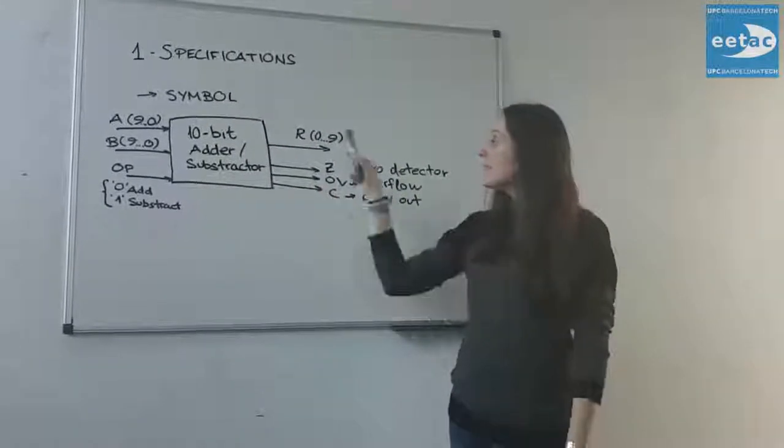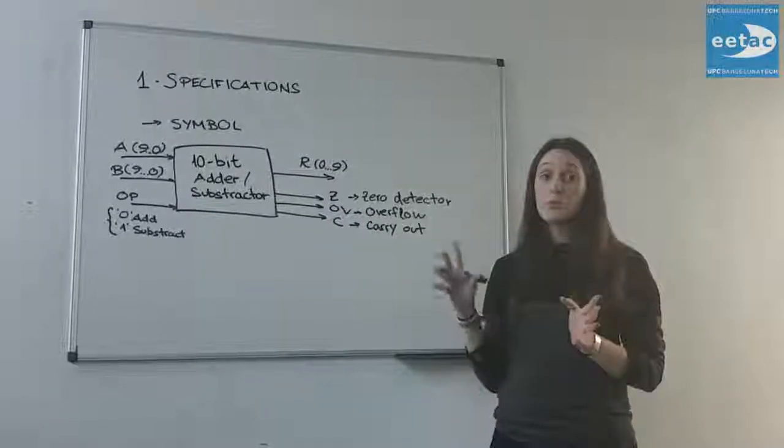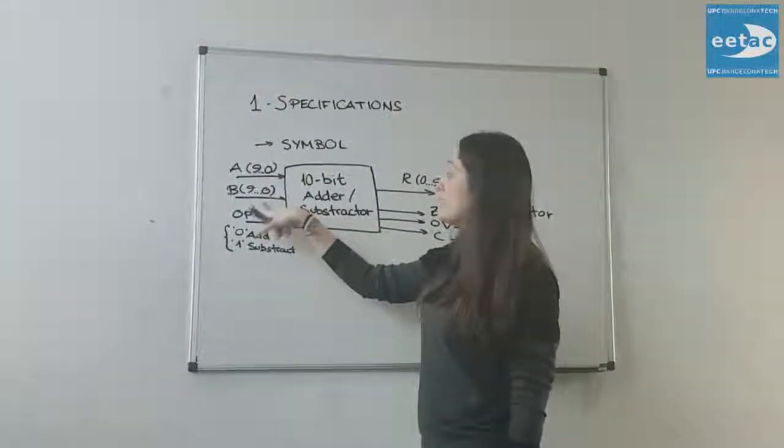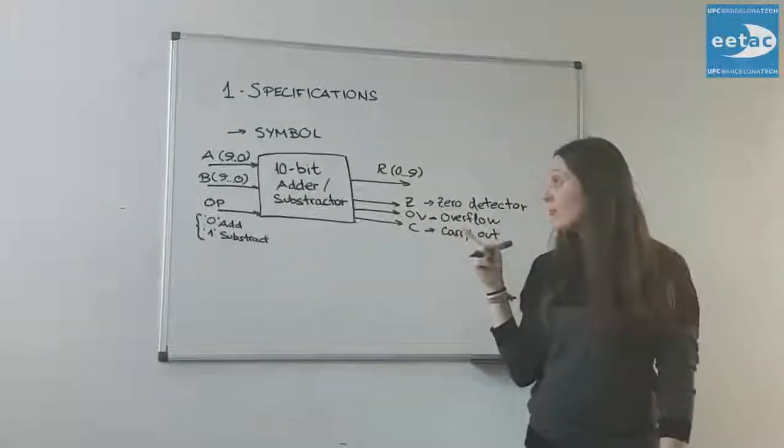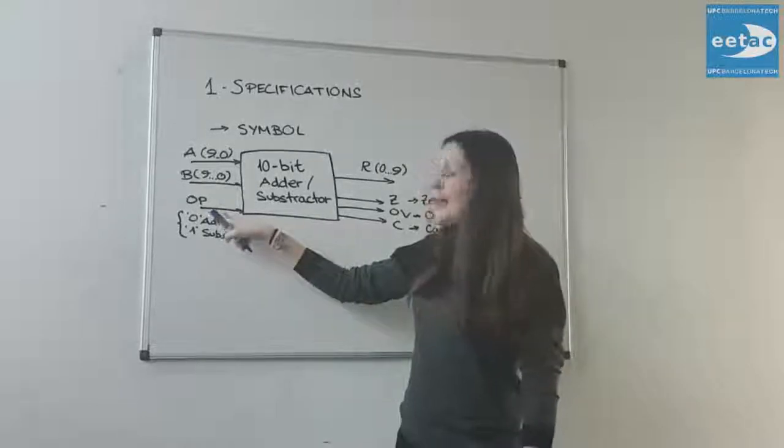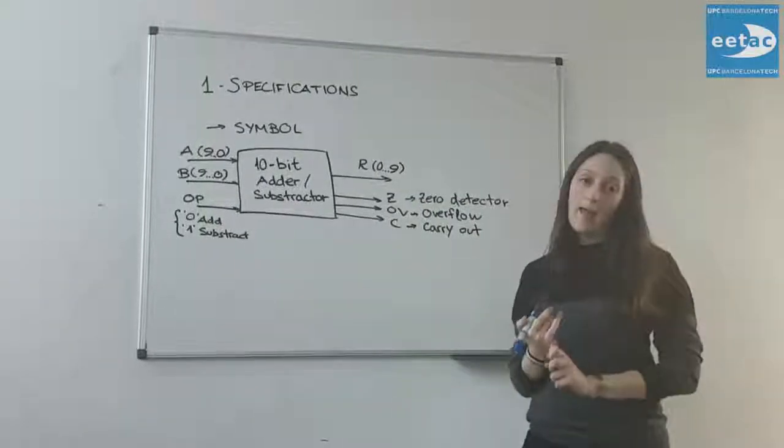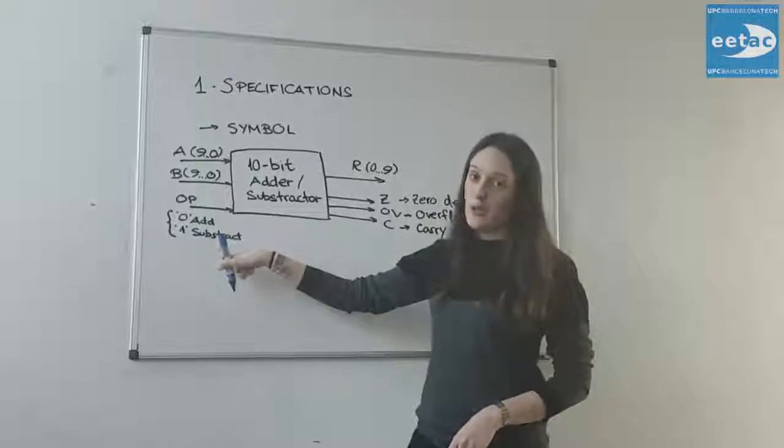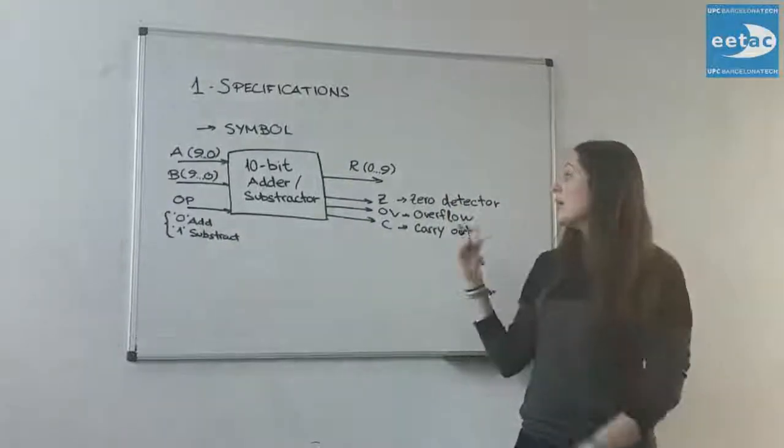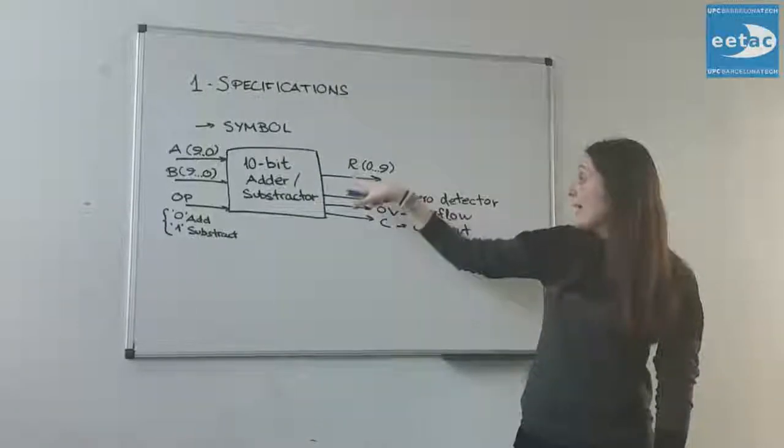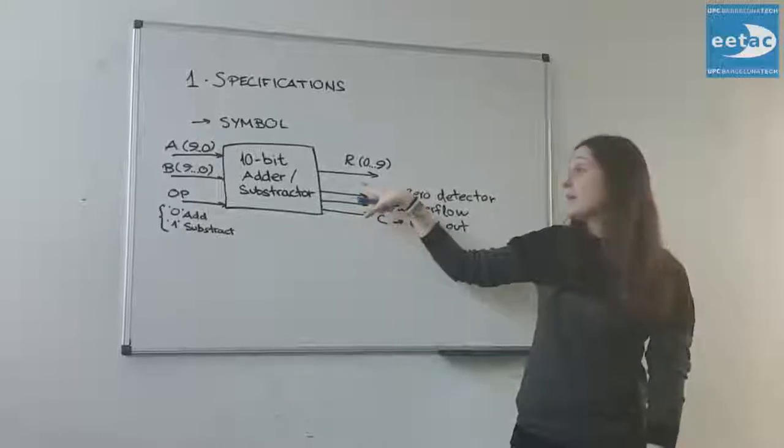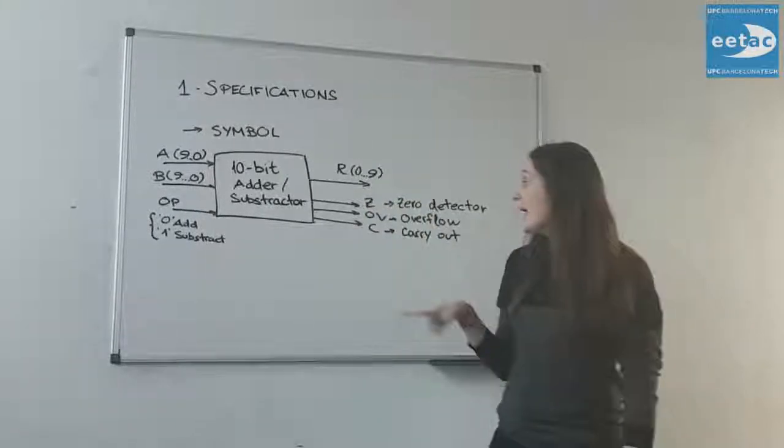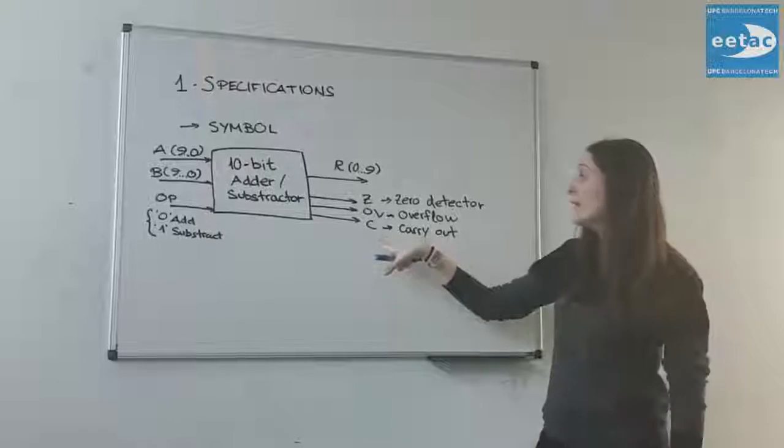So the symbol of the system is this one and we are going to explain the inputs and outputs. Inputs will be two numbers that are composed by 10 bits, for instance number A and B, and moreover we will have the operation. The operation can be add or subtract. A 0 is referred to the operation add and a 1 is subtract. These are the inputs and there will be outputs. The main output is R which is the result. The result will be also a 10 bit number as the input.